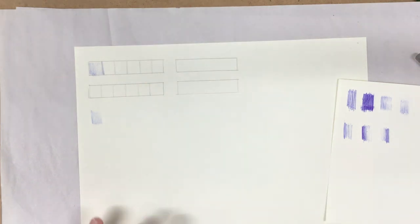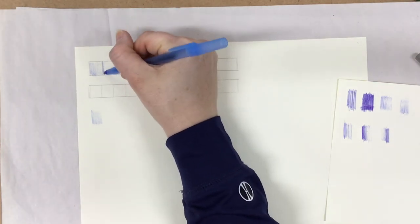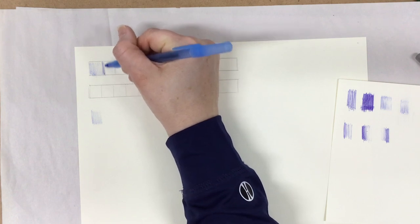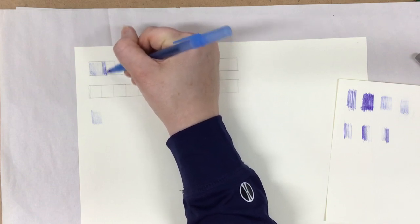And I could use my blending stump to maybe make that smoother if I wanted to, but I want it to stay light. So I'm not going to smudge it. And so then I'm going to go to the next value. And instead of applying pressure, I'm just going to do some more layers.